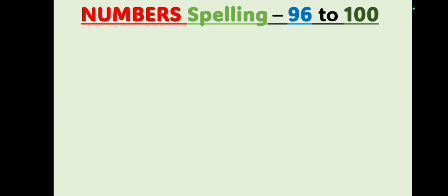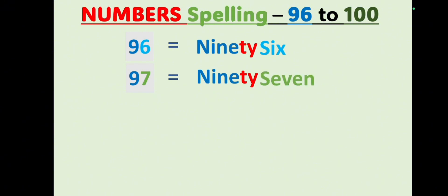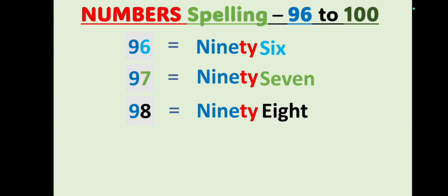Now let's move on to number spellings from 96 to 100. 96 — N-I-N-E-T-Y, 90, S-I-X, 6 — 96. 97 — N-I-N-E-T-Y, 90, S-E-V-E-N, 7 — 97. 98 — N-I-N-E-T-Y, 90, E-I-G-H-T, 8 — 98.